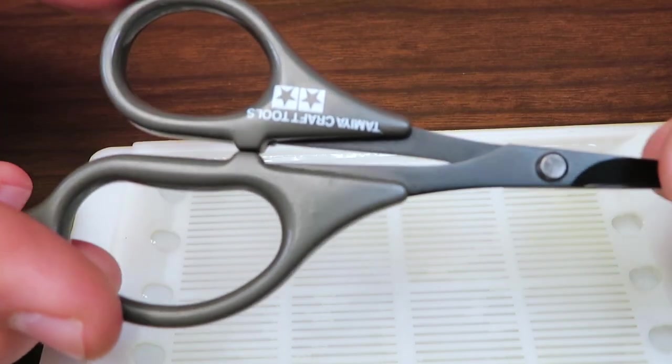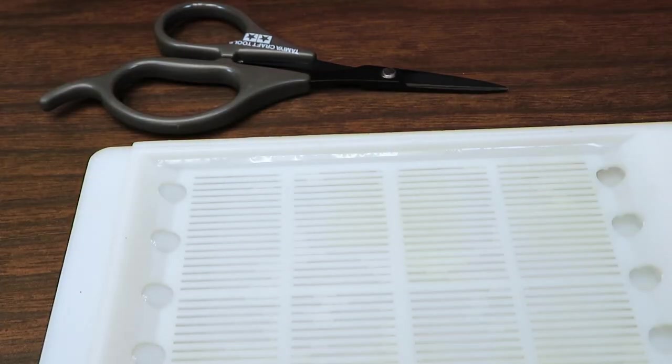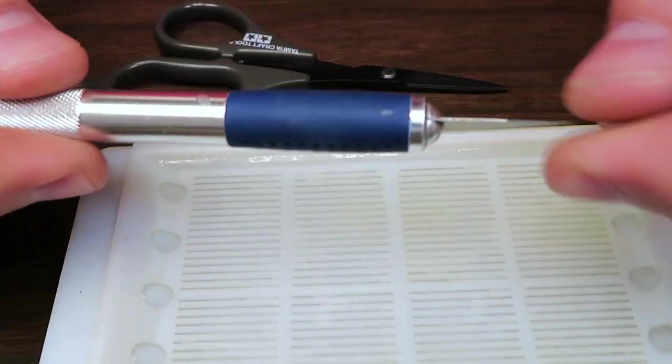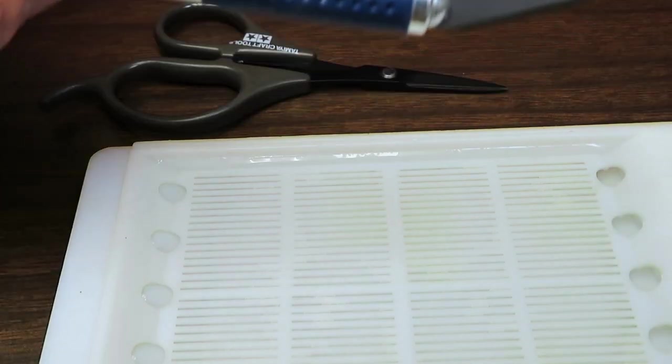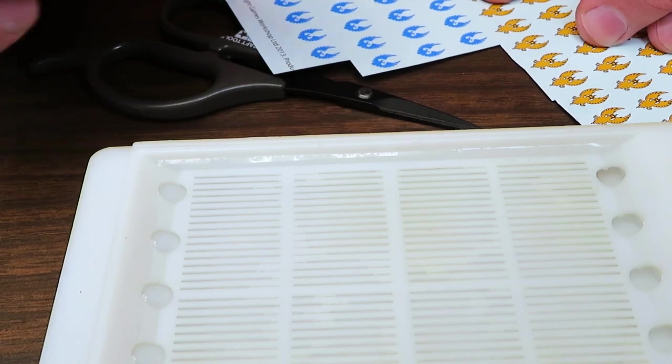Next thing I'm going to do is I'm going to cut out my decal. Now you can use an exacto knife which is pretty standard. Most guys use it. Cut out, trace around your decal with it, and then cut it out and drop it in your water.